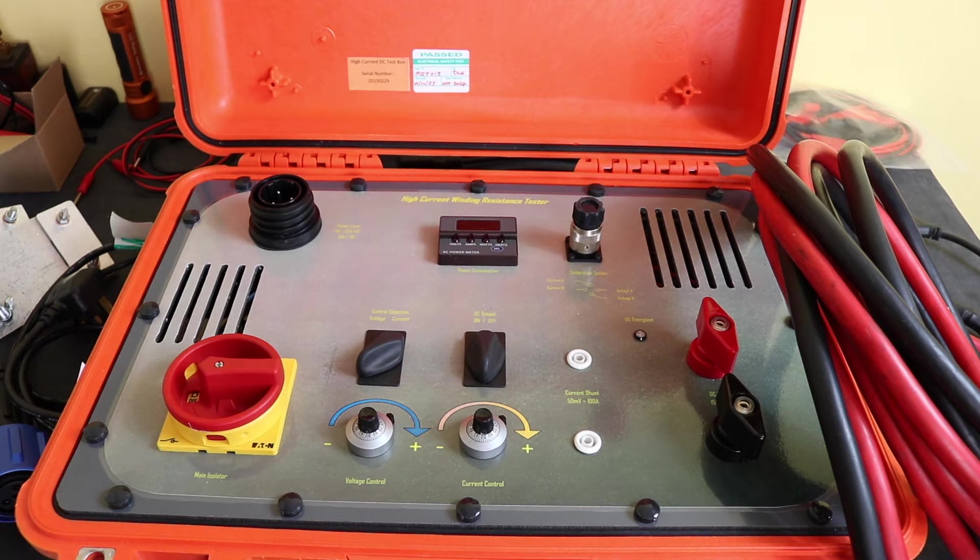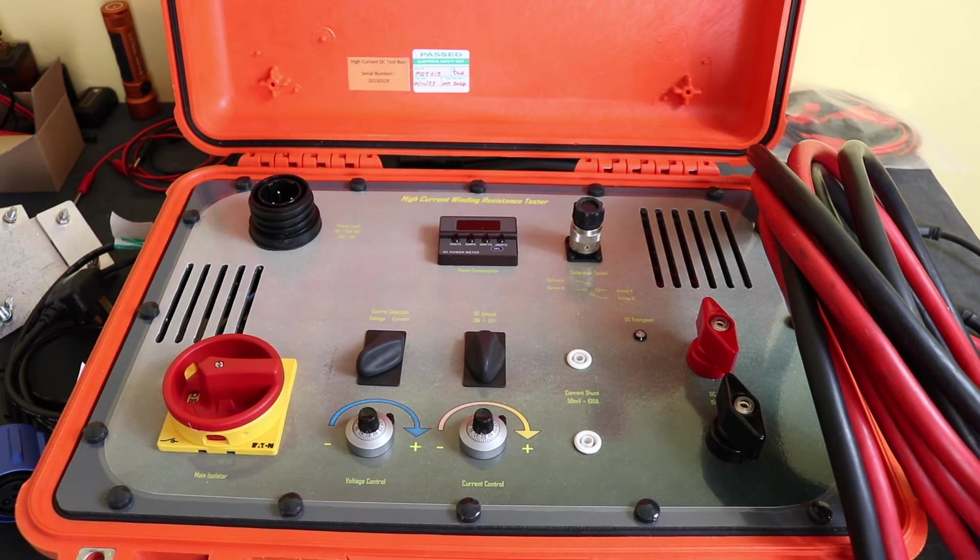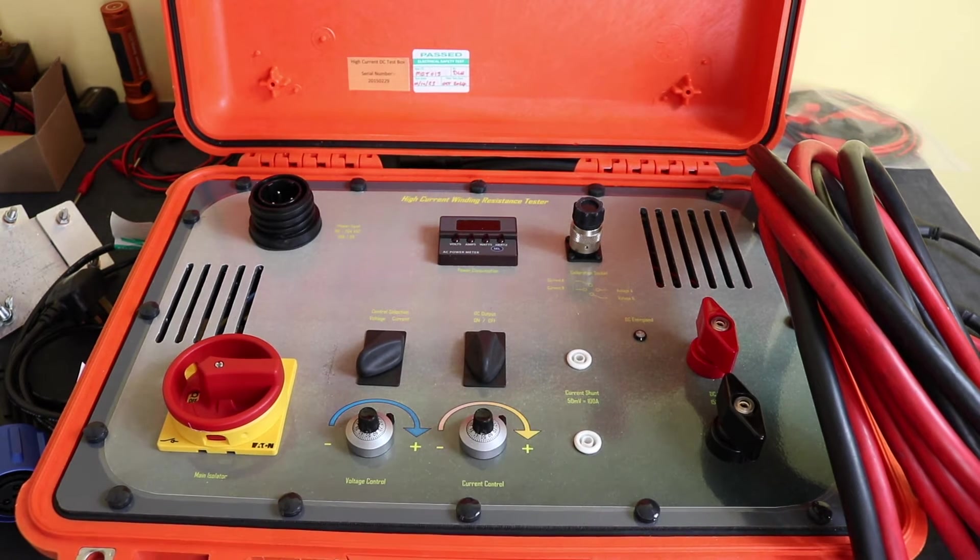This is what the test set looks like with the lid open. You have the output connections here on the right hand side that our main leads bolt onto. This test set can put out 15 volts at 100 amps. So what I would do is connect this up to the winding and make a number of measurements at different output currents. We'll be measuring the output current via this millivolt shunt here and measure the actual voltage being applied to the winding. It's then simple Ohm's law to calculate the resistance of the winding.